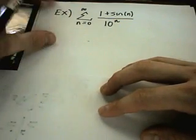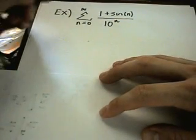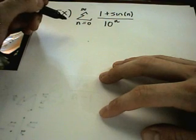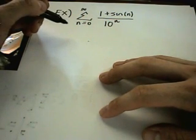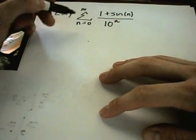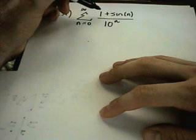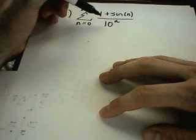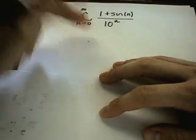Alright, here are a few more examples using the direct comparison test or the limit comparison test to show whether a particular series will converge or diverge. In this case, notice we have 1 plus sine of n over 10 to the n.